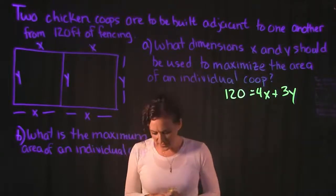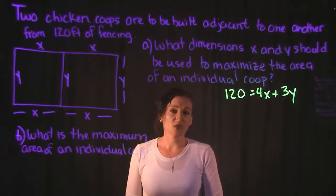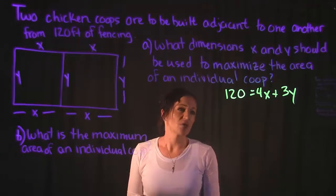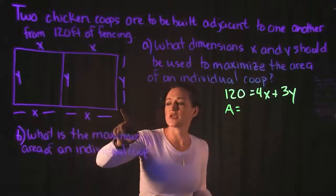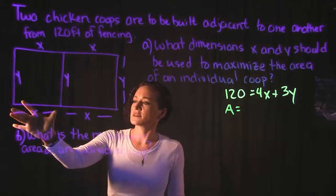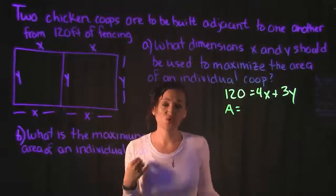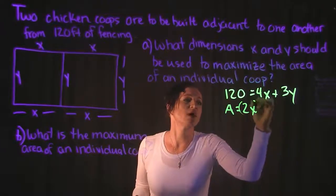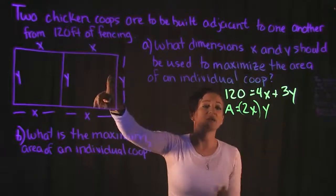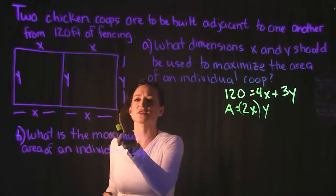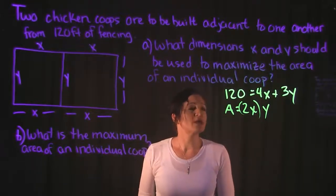We also need to create an equation for area. The area of a rectangle is length times width. The total length here is X plus X, which is two X, and the width is Y. So area is equal to two X times Y.